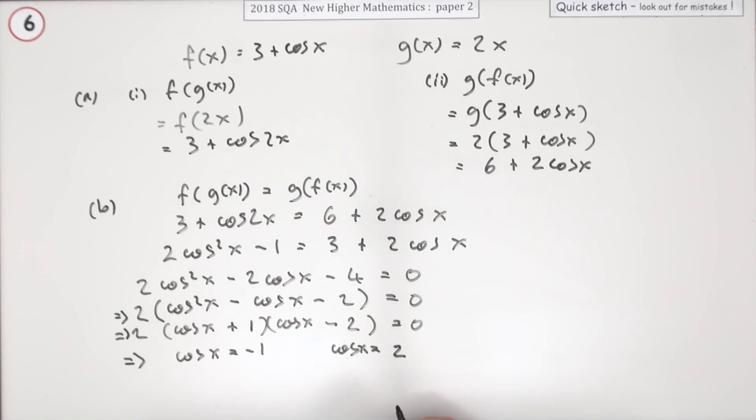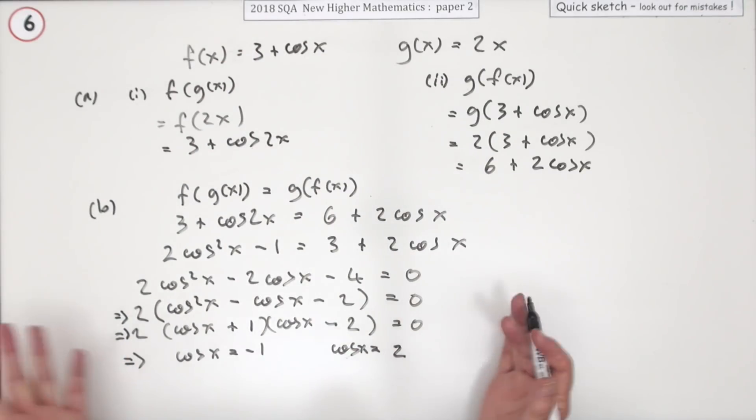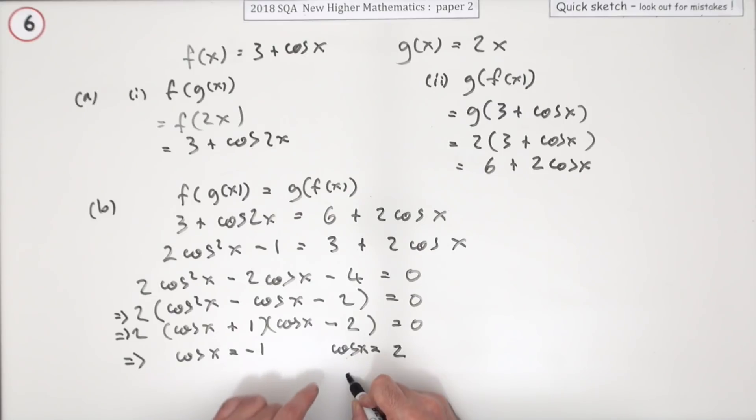At this point you start to get worried because this is paper two and it's all looking a bit too simple. You're not going to be using your calculator because you were told this was in radians—no degree signs—but it's all working out very simply because this one's got no solution in the first place.